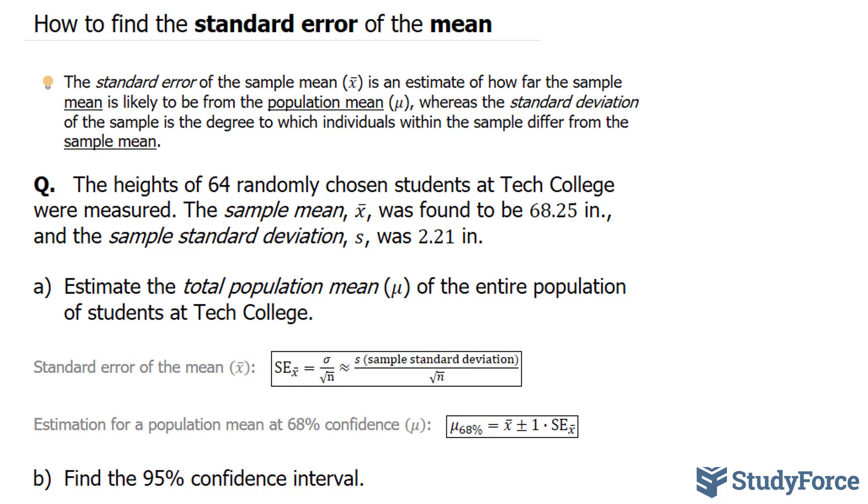The question reads: the heights of 64 randomly chosen students at a tech college were measured. So the sample mean here is 64. The sample mean, x bar, was found to be 68.25 inches, and the standard deviation represented by the letter s was 2.21 inches. Estimate the total population mean, mu, of the entire population of students at Tech College.